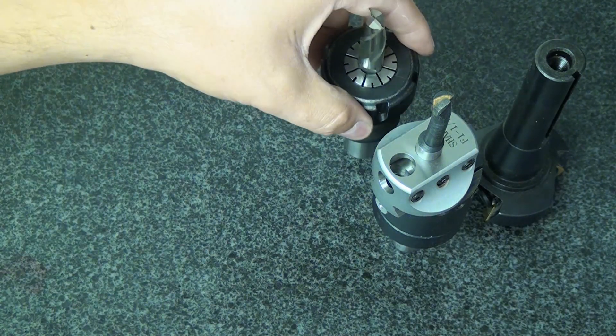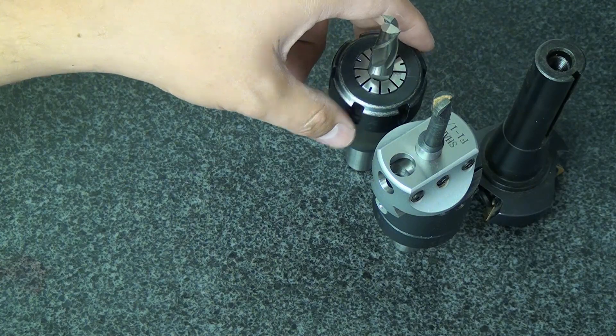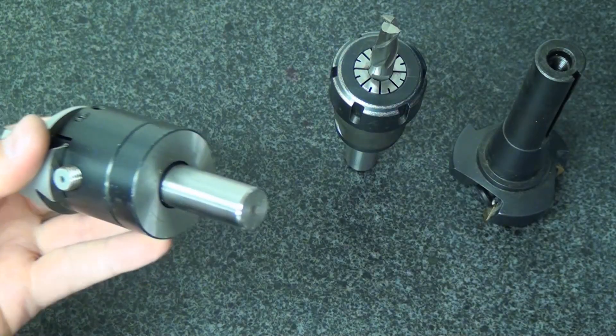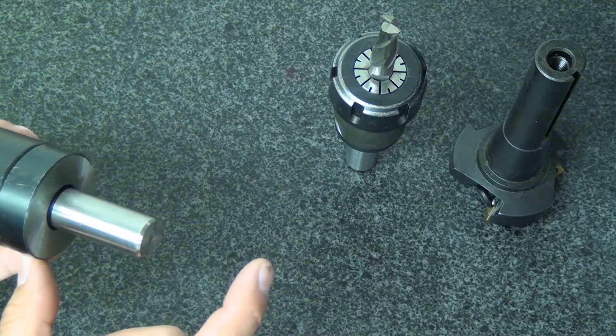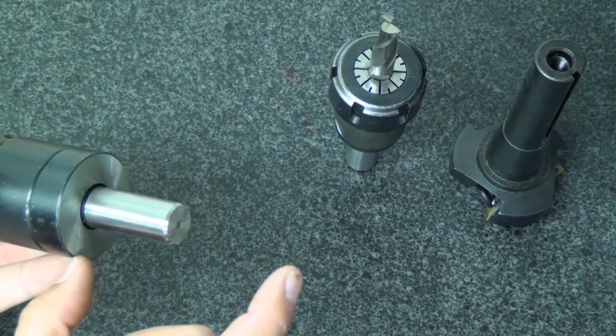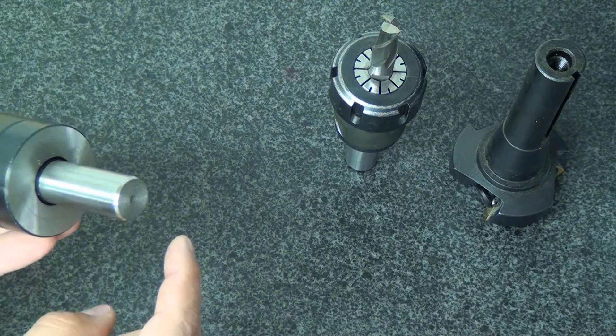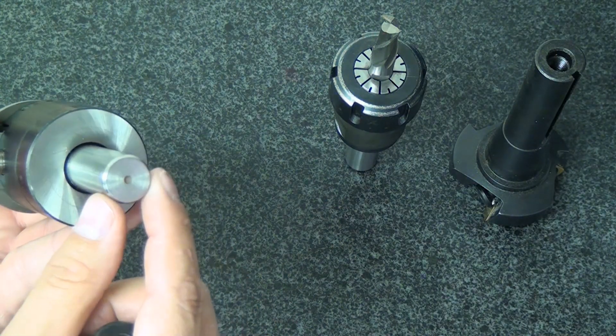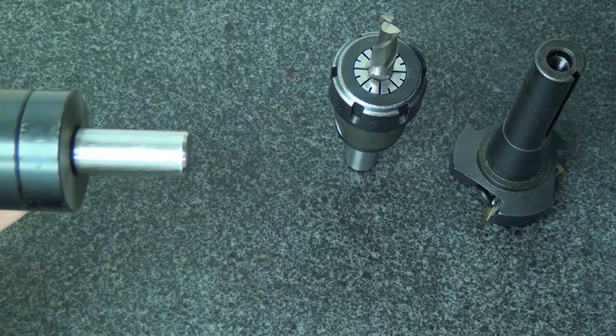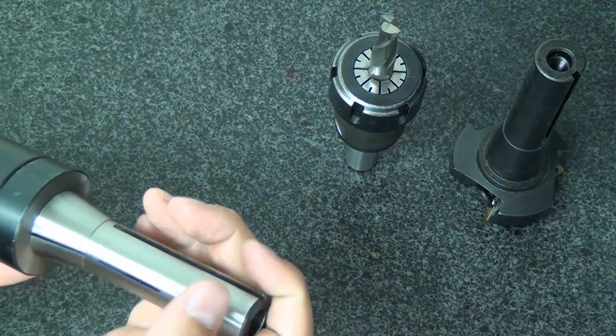Anyway, the boring bar and the arbor came separately, and this was actually really, really long. I got it from Shars. Both parts came from Shars. So I actually cut this down with a Sawzall and then put it in my lathe and chewed up the end and put a chamfer on it. And it works perfectly. I've had really good luck with this.